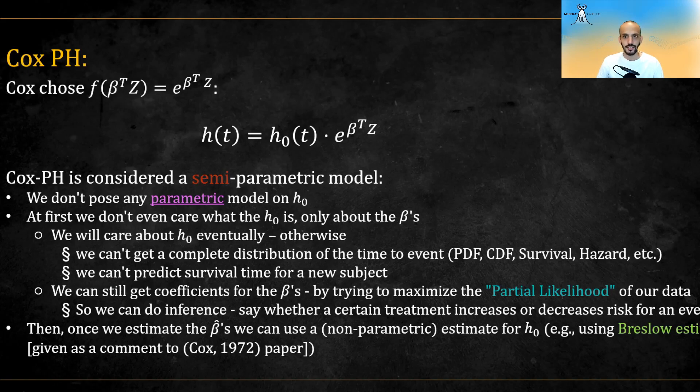Nonetheless, even without h0, we can still estimate the coefficients by trying to maximize a quantity called the partial likelihood. Once we've estimated the regression coefficients, we can also estimate the baseline hazard, for example, by using the Bresslow estimator. I will discuss this in a separate video.